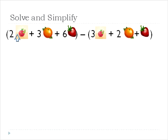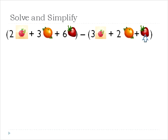In this one we have two apples, we have three oranges, we have six strawberries, and then from that bag we are subtracting three apples, two oranges, and one strawberry. So that's what we're doing.